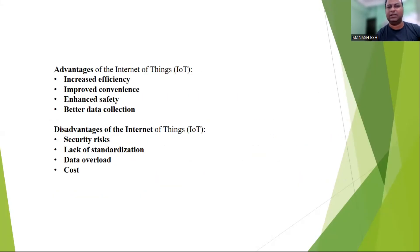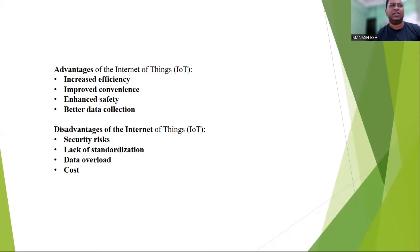IoT also has some disadvantages. It has security risks — devices are vulnerable to security breaches and hacking, which can compromise user privacy and safety. There is a lack of standardization, which can make it difficult to ensure compatibility and interoperability between different devices and systems. Data overload can be difficult to manage and analyze effectively. The cost of IoT devices and systems can be high, particularly for businesses and organizations that need to deploy large-scale IoT networks. It is important to note that while IoT has many potential advantages, it also comes with significant risks and challenges that need to be addressed to ensure its safe and effective implementation.